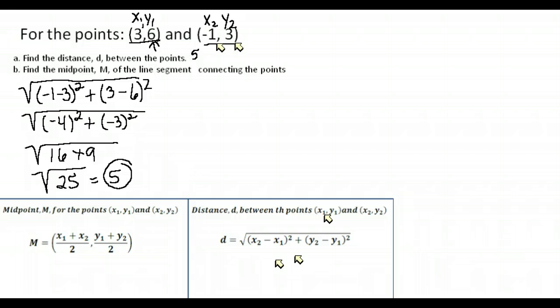Now let's find the midpoint. The midpoint is right in the center, so we're basically averaging the two points to find their middle. It is a point — not just a number — so we'll end up with an x value and a y value. The formula: add the x values and divide by two, then add the two y values and divide by two.